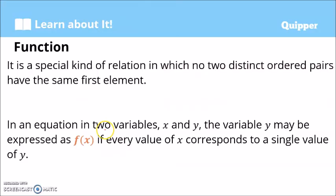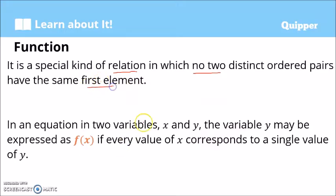A function is a special kind of relation in which no two distinct ordered pairs have the same first element. So remember, it's a relation — no two distinct ordered pairs have the same first element. Therefore, if we are given ordered pairs, we need to check on their first element.